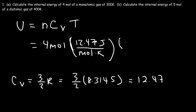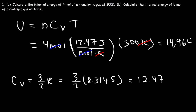The temperature is 300 Kelvin. The unit moles will cancel and the unit Kelvin will cancel, so it's 4 times 12.47 times 300. The internal energy works out to be 14,964 joules. That's the answer to the first part of the problem.